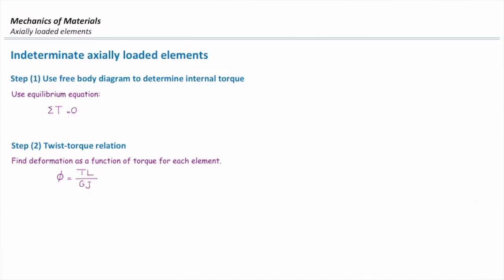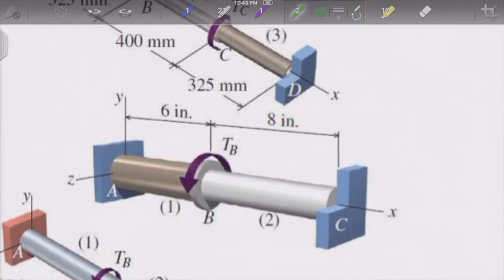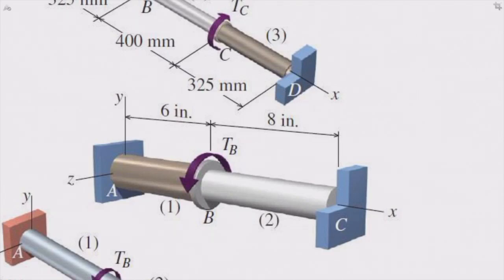In the third step, we establish a relation between the deformations or twists in different shafts. It depends on the geometry of the problem. Generally, we have two categories. In axially loaded elements, we had three. Here we have two categories, so torsional elements are basically easier compared to axially loaded elements. In this figure, when we move from A to B, phi 1 and phi 2 are equal to zero. Not each of them, but sum of them equals zero.